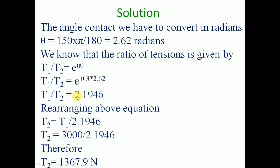Substituting the values, T1 by T2 is equal to e raised to 0.3 into 2.62, which gives T1 by T2 equal to 2.1946. Rearranging this equation to find T2: T2 is equal to T1 divided by 2.1946. Substituting T1 equal to 3000 N, T2 is equal to 3000 by 2.1946. Therefore, T2 is equal to 1367.9 Newtons.